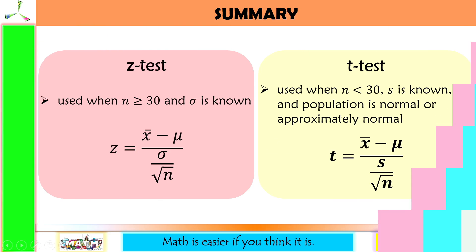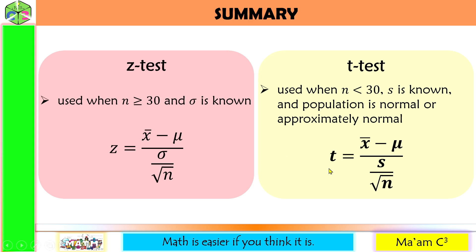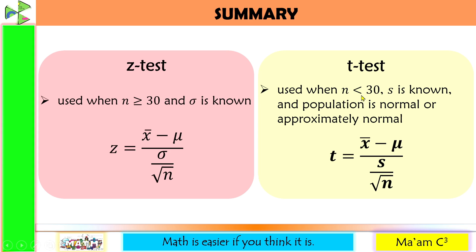For the summary: Z-test is used when sample size is greater than or equal to 30 and the population standard deviation is known. T-test is used when sample size is less than 30, sample standard deviation is known, and the population is normal or at least approximately normal.